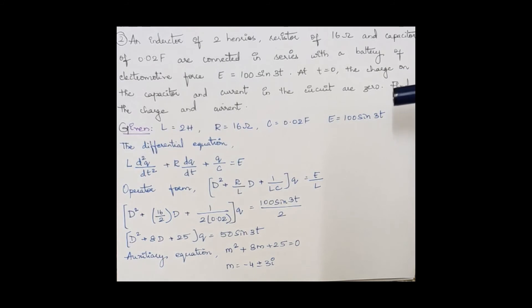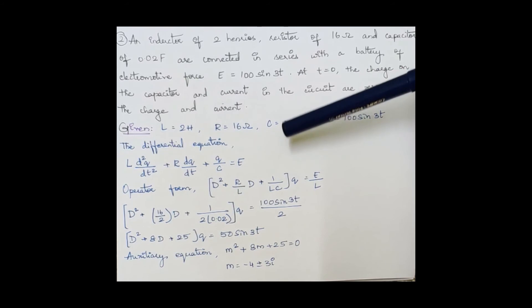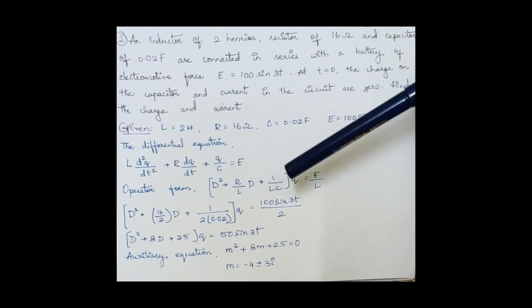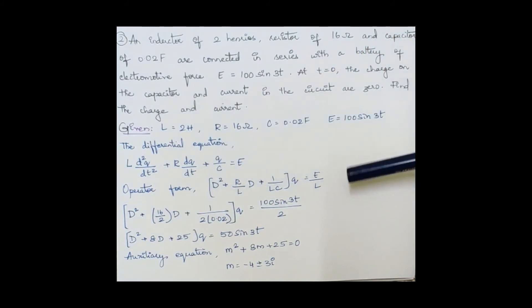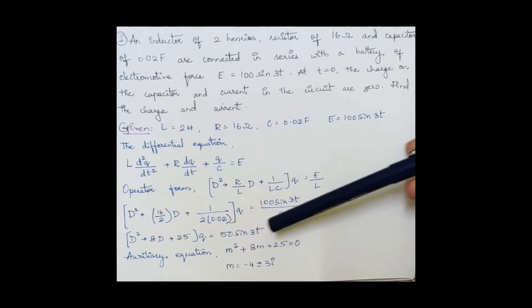We have to find both complementary function and particular integral for this. On applying the general form, we obtain this. And here, try dividing the whole thing by L and substituting, we obtain this. This is trying to substitute the given values here.